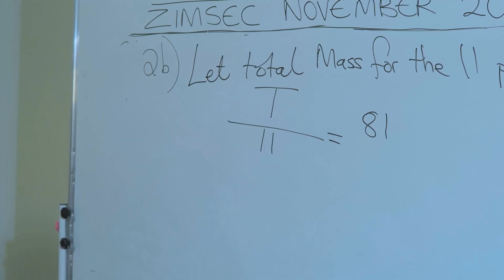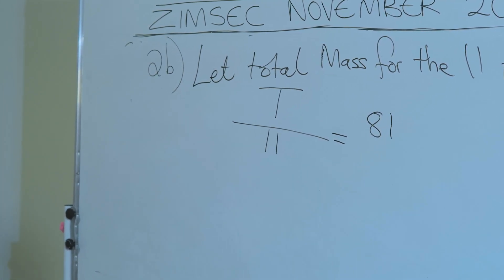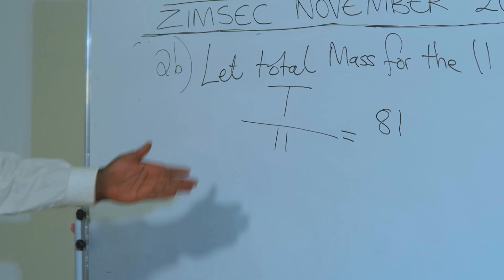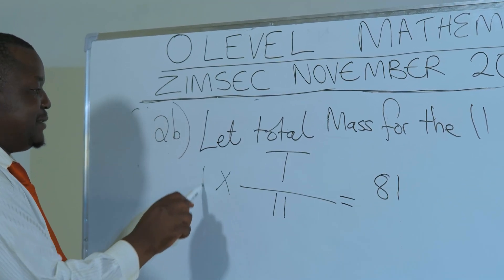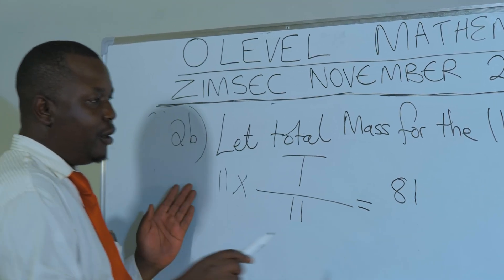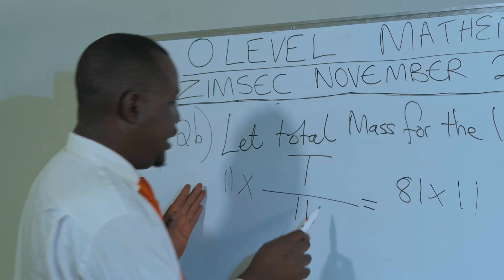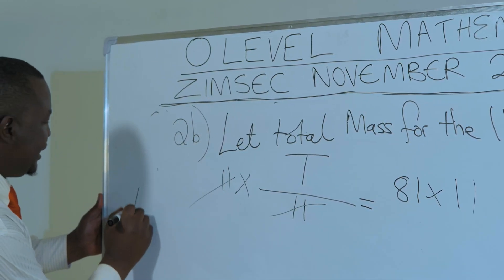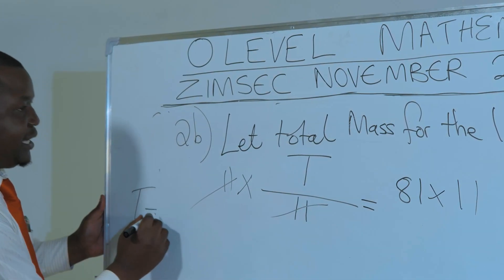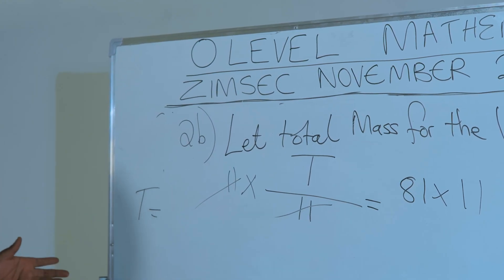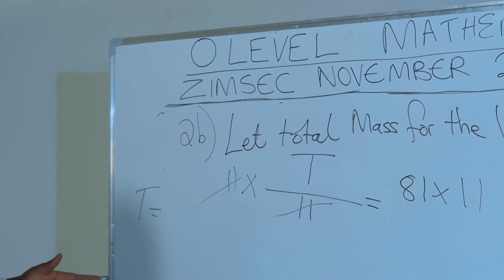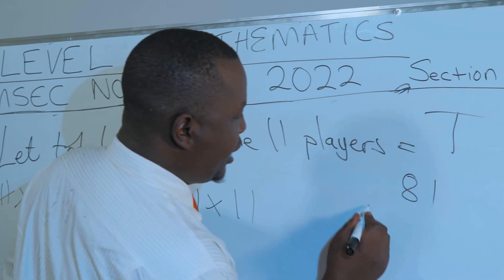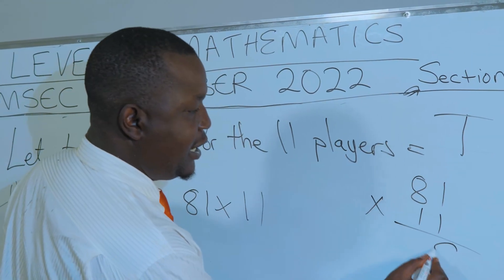The average is 81. So we are solving this simple linear equation. We remove the fraction by multiplying both sides by 11. Then these ones cancel out. Then you are going to get T being equal to 81 multiplied by 11. Let's just do a quick arithmetic on that one.